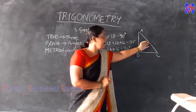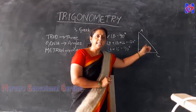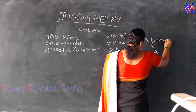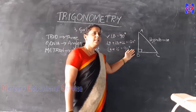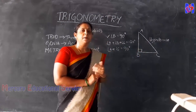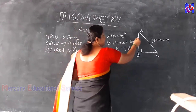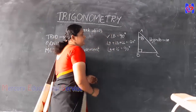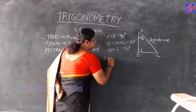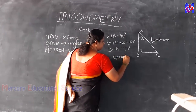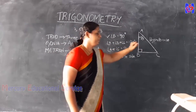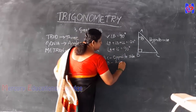In a right angle triangle, the side which is opposite to the right angle is called the hypotenuse. Suppose we take another angle theta at A, then the side which is opposite to theta is called the opposite side — here, BC is the opposite side. And the remaining side adjacent to theta is called the adjacent side — here, AB is the adjacent side.